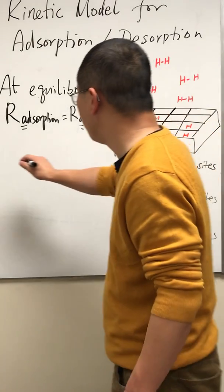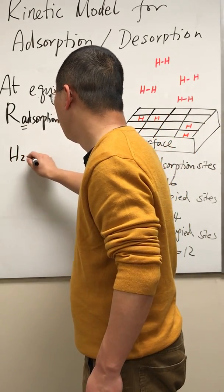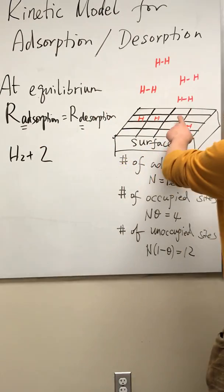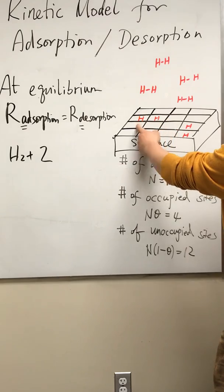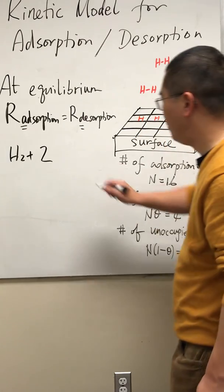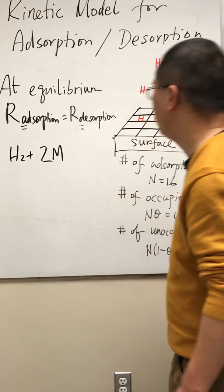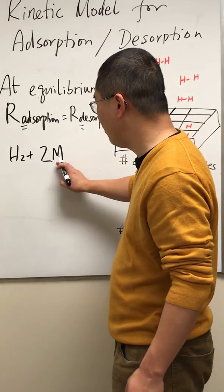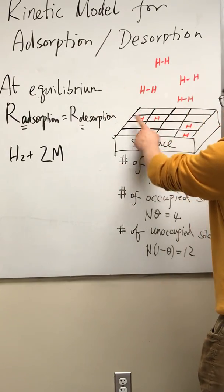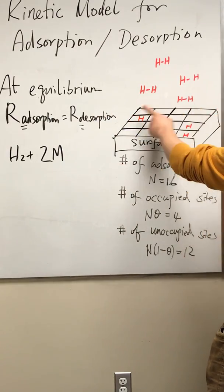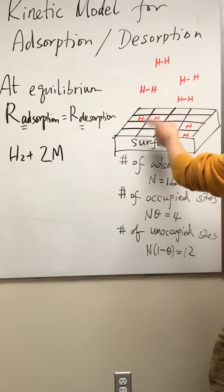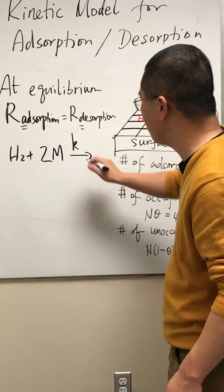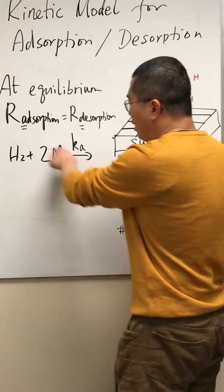Now let's look at the adsorption. It's very simple, it's H2 react with two sites. I'm going to use M, and each M is one adsorption site. Over here this M is the available sites. There are 12 available sites, unoccupied sites here. Let's say this has the reaction rate constant of ka, again a stands for adsorption.